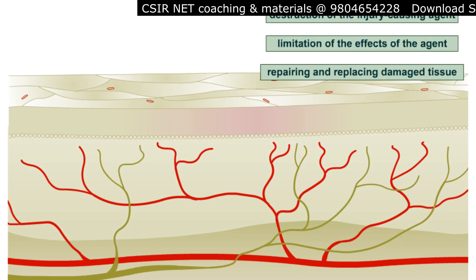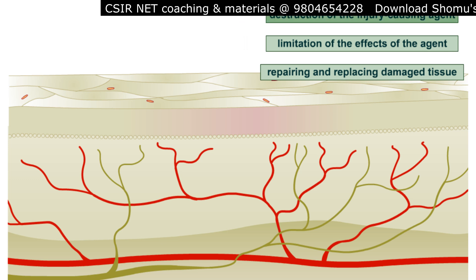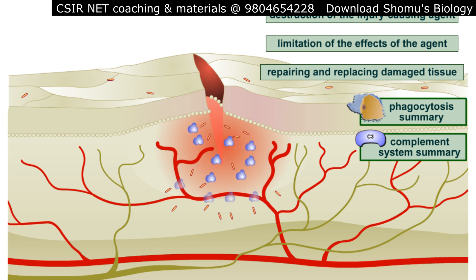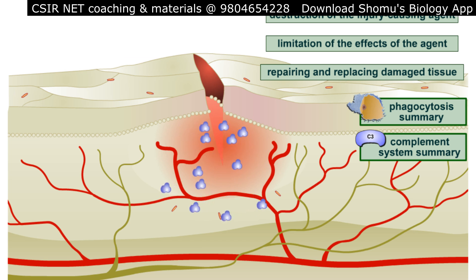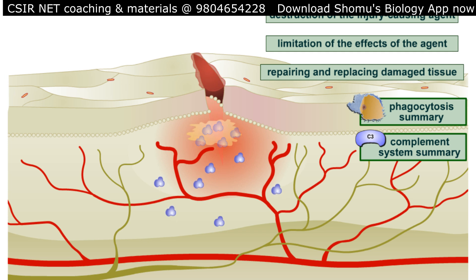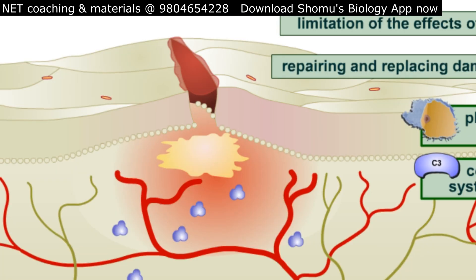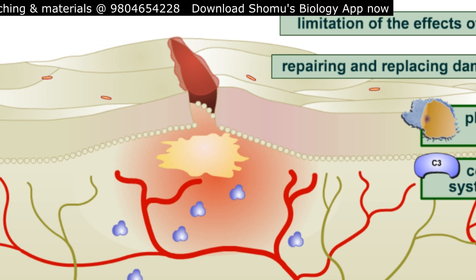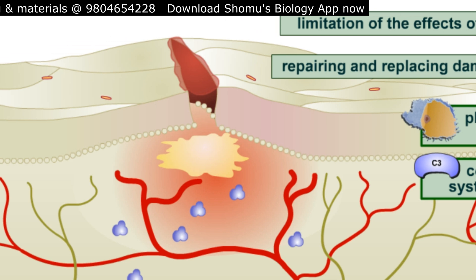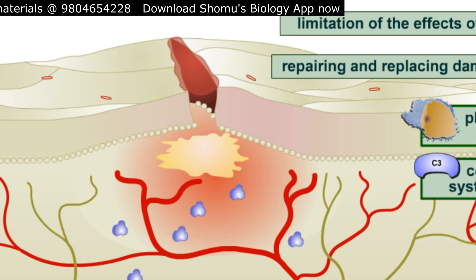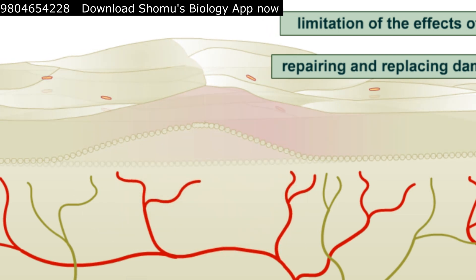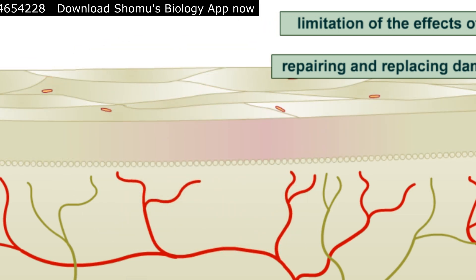Now let's talk about the functions of inflammation: destruction of the injury-causing agent, limitation of the effect of the agent, and repairing and replacing the damaged tissue. Regarding destruction of the injury, the migration of phagocytes and other factors to the site of injury usually results in the destruction of microorganisms. Phagocytes directly attack the microorganisms, but other components of the body's defense system such as the complement system are also involved in this process.